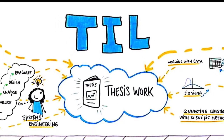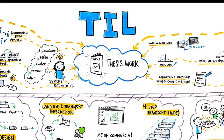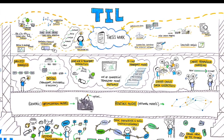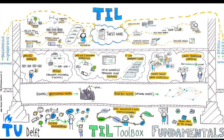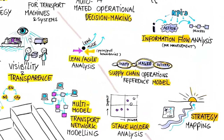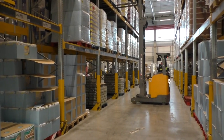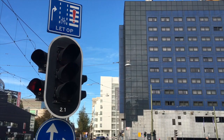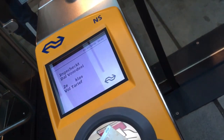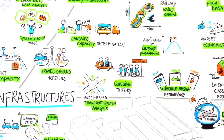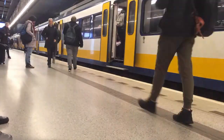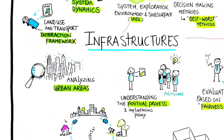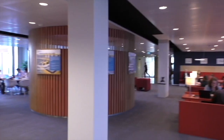As a TIL student, you gain key knowledge of subjects related to transport, infrastructure and logistics through fundamental courses. Then you get to specialise according to your own interests. You can choose to dive into logistics and supply chains, or more into traffic operations and technology. You can also specialise in transport network design, looking at road, passenger and freight networks, or specialise in policy analysis and management in the context of urban planning.